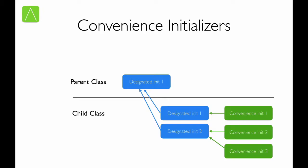This diagram illustrates how designated and convenience initializers work. We have a parent class which has only one initializer — the parent class's designated initializer. The child class has two designated initializers and three convenience initializers. Convenience init 1 delegates to designated init 1, while convenience init 2 and 3 delegate to designated init 2. Designated init 1 and 2, in turn, can only delegate up to the parent class designated init.